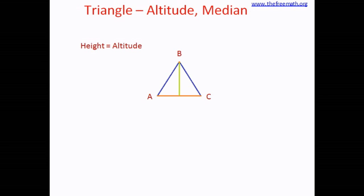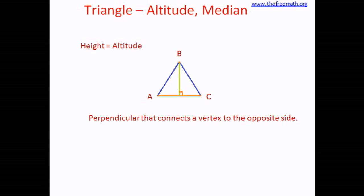If you hold a thread or measuring tape from B to AC, you have to make sure it makes a straight line — it shouldn't be slanting. That means it should make an angle of 90 degrees with the side AC, or in other words, it has to be perpendicular to AC. Perpendicular means it makes an angle of 90 degrees. Whatever you measure this way is the height, also called an altitude. So a perpendicular that connects a vertex to the opposite side is called an altitude of the triangle.